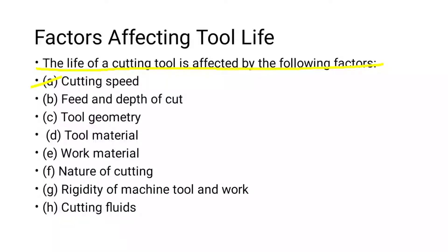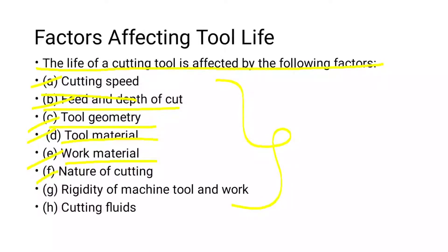The factors affecting tool life are: first, cutting speed; second, feed and depth of cut; third, tool geometry; fourth, tool material; fifth, work material; sixth, nature of cutting; seventh, rigidity of machine tool and workpiece; and eighth, cutting fluid.